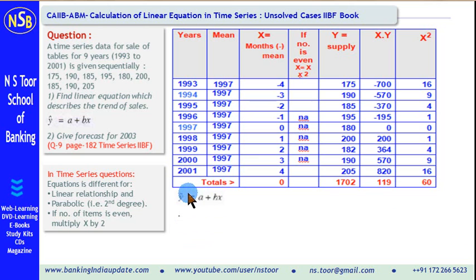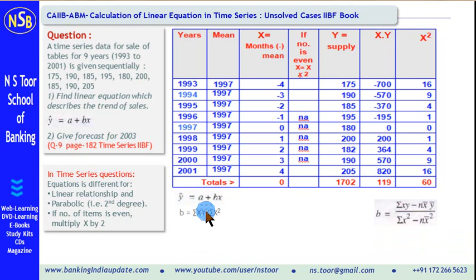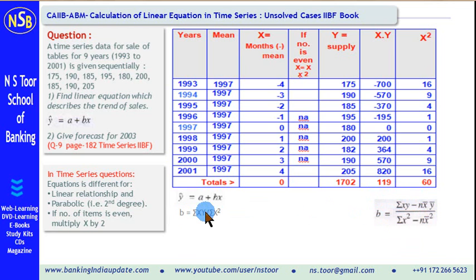Based on this information we shall make the calculation. We have to find out the linear equation. We need to calculate the value of a and b. To calculate b, we use the formula b = Σxy / Σx², which is a short form of the full formula — since x̄ = 0, those terms drop out. To calculate a, we use a = ȳ − b·x̄.